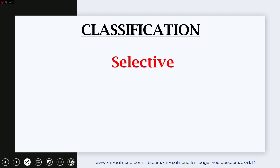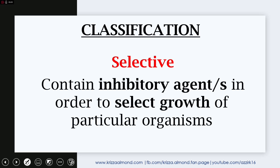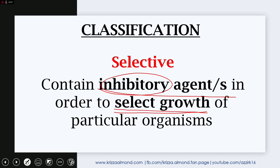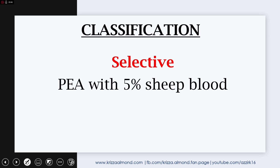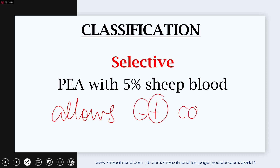The next classification is selective. Selective culture media contain inhibitory agents in order to select growth of particular organisms — only the desired organisms will be able to grow. An example is phenylethyl alcohol agar, or PEA, with 5% sheep blood, which allows growth of gram-positive cocci and inhibits the growth of aerobic and facultative anaerobic gram-negative bacilli.